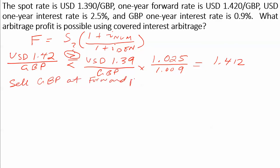Whatever you do in the forward market, you have to do the opposite in the spot market to have the arbitrage. Therefore, we need to buy the British pound at the spot price. That's the hardest step. Once we figure this out, everything falls into place. So now let's start from the beginning.